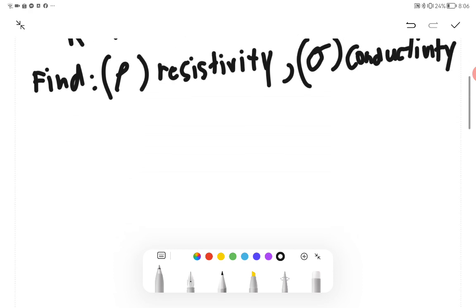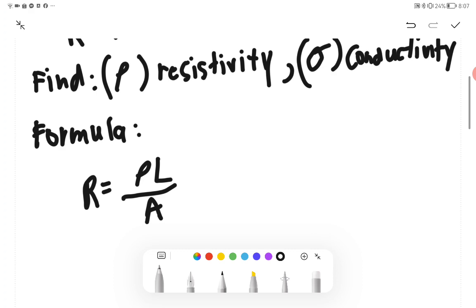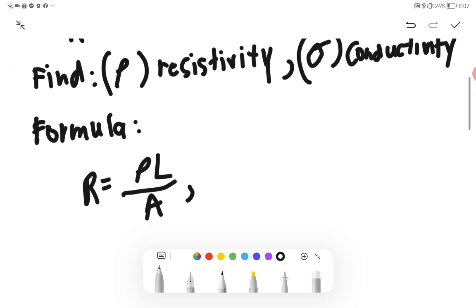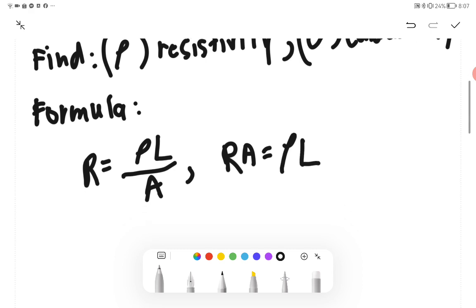Therefore we have the formula that we will use, which is resistance equals ρL over A. We have our L, we have our A, we have R, so let's manipulate so that ρ will be left alone. We have multiplication, we will have RA equals ρL, divide it all with the length, we will have ρ equals RA over L.